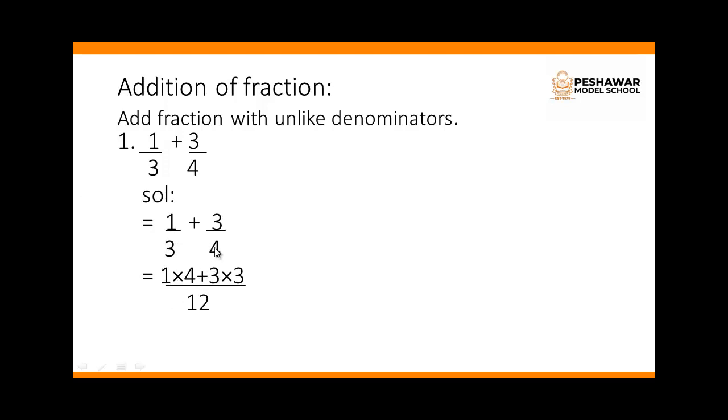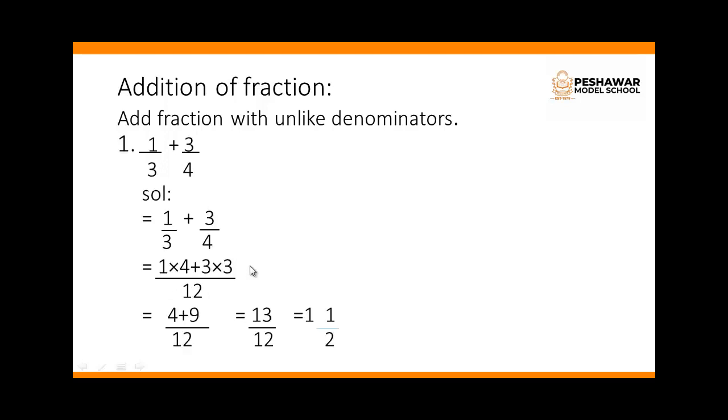Plus 4 threes are 12, so we multiply 3 with the numerator. 1 multiply 4 plus 3 multiply 3. We will get 4, 1 times 4 is 4, plus 3 times 3 is 9.